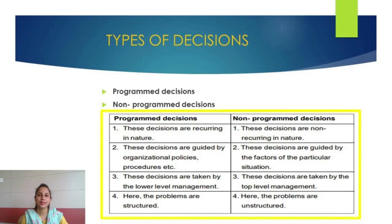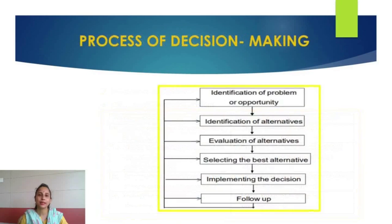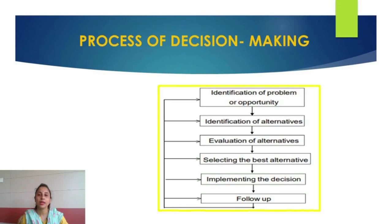Now let us discuss the steps in the process of decision making. There is a flowchart showing the steps: first, identification of the problem or opportunity; then identification of alternatives; then evaluation of the alternatives; then selecting the best alternative; then implementing the decision; and finally, follow-up.